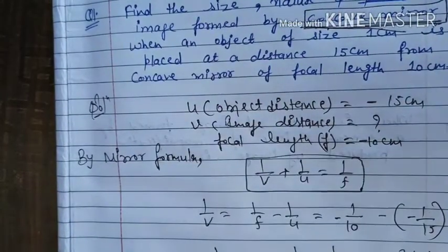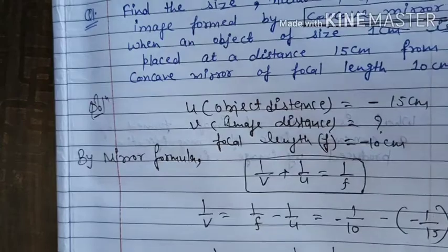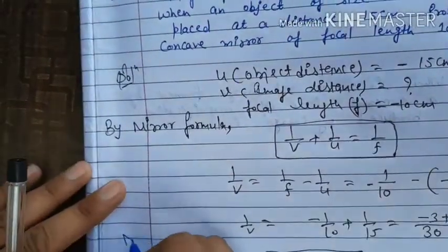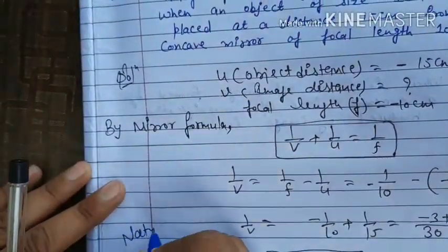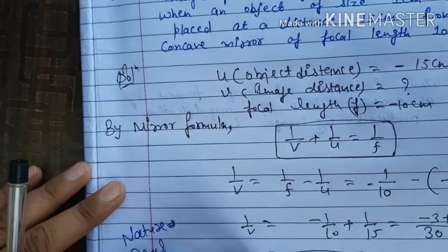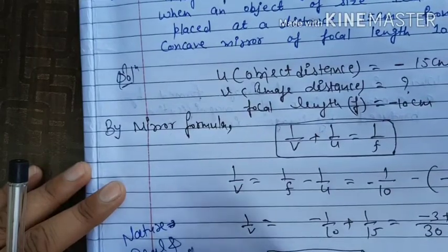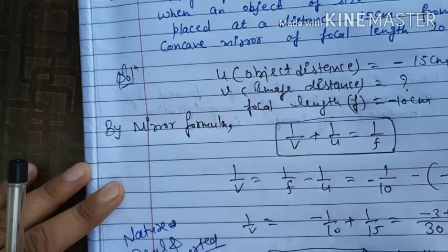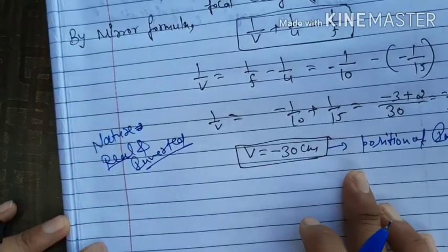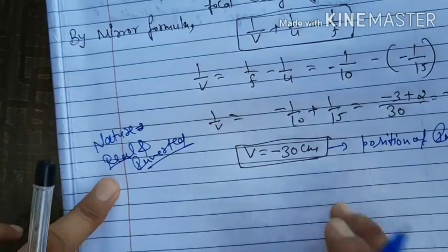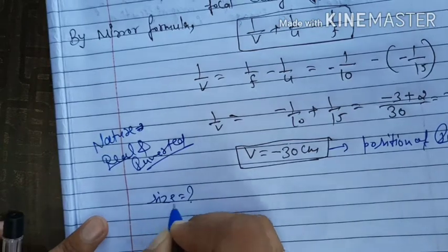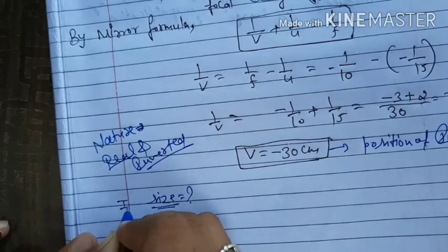After cross-multiplying, v = −30 centimeters. Since the image distance is negative, the image is real and inverted. So we have the position and nature of the image.